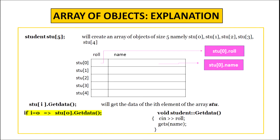The statement student stu[5] creates an array of objects of size 5, namely stu[0], stu[1], stu[2], stu[3] and stu[4]. All these array elements have two data members each: role and name. When we give the statement stu[i].get data, it gets the data of the ith element of the array stu. For example, if i is 0, the statement becomes stu[0].get data, and whatever values we input in role and name are stored in the data members of object stu[0], that is stu[0].role and stu[0].name.